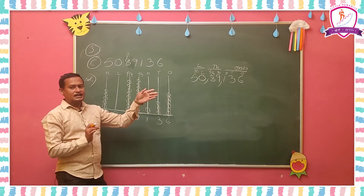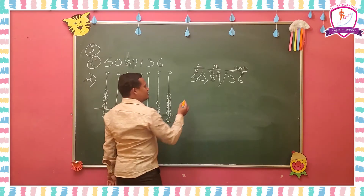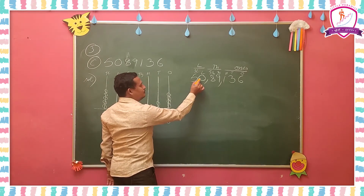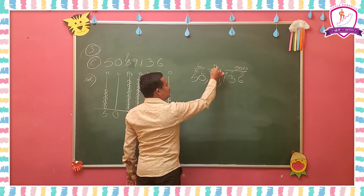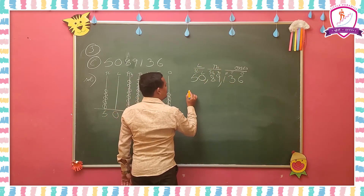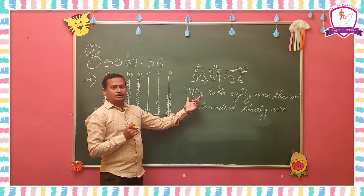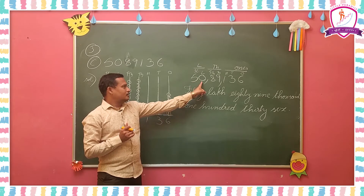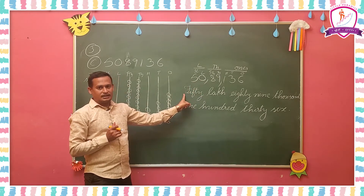After that, the next thing is to write the number name. Here, you have to read this number as 50 lakhs 89,136. Like that, you have to write the number name for the given number.